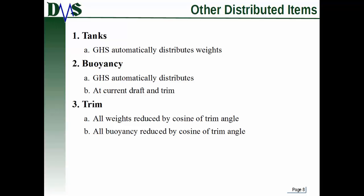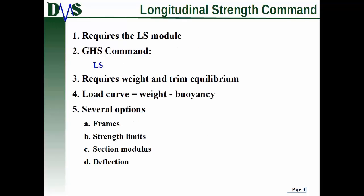Now buoyancy is a distributed weight as well. So that's why you have the station definitions. GHS actually knows how much buoyancy is added at each one of your sections. And it is the buoyancy at your current draft and trim. So this is another thing is when you're doing longitudinal strength analysis, usually you have to do it for several different loading conditions because the draft and trim matter since they affect your buoyancy. And notice how I said trim matters. How does the trim modify things? GHS will take your trim angle and all of your weights get reduced by the cosine of that trim angle. And all of the buoyancy gets reduced by the cosine of that trim angle.